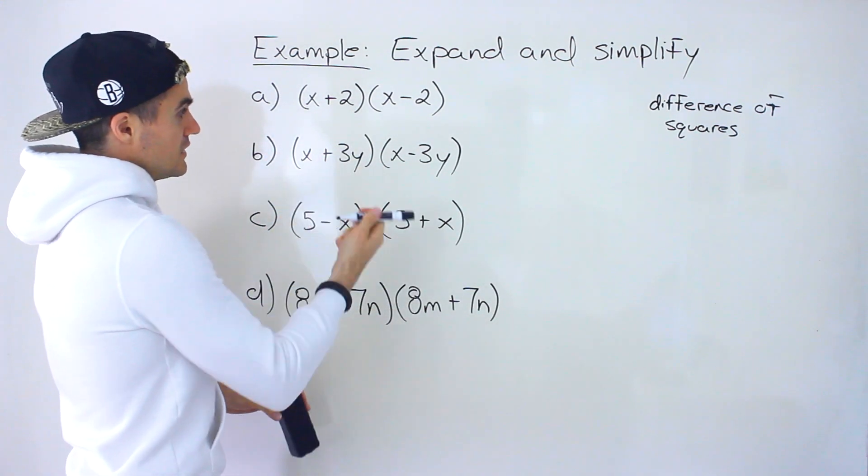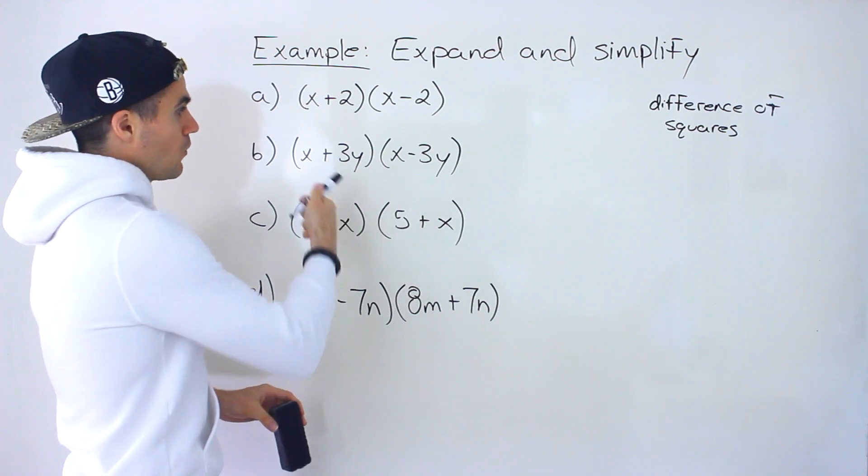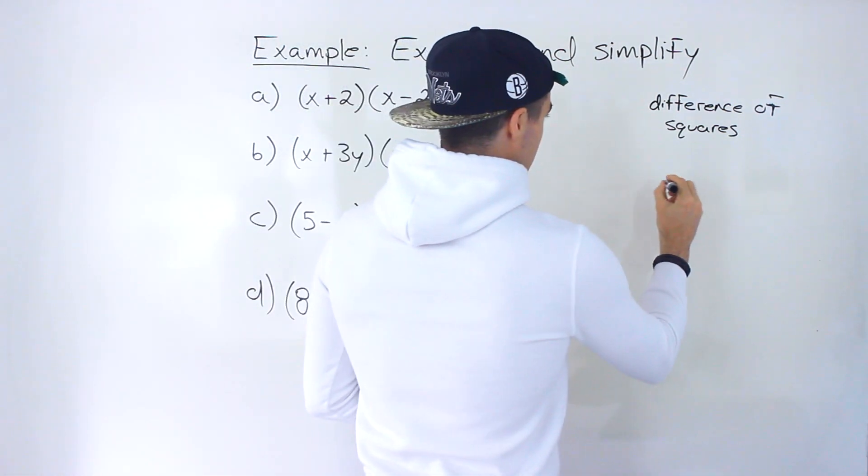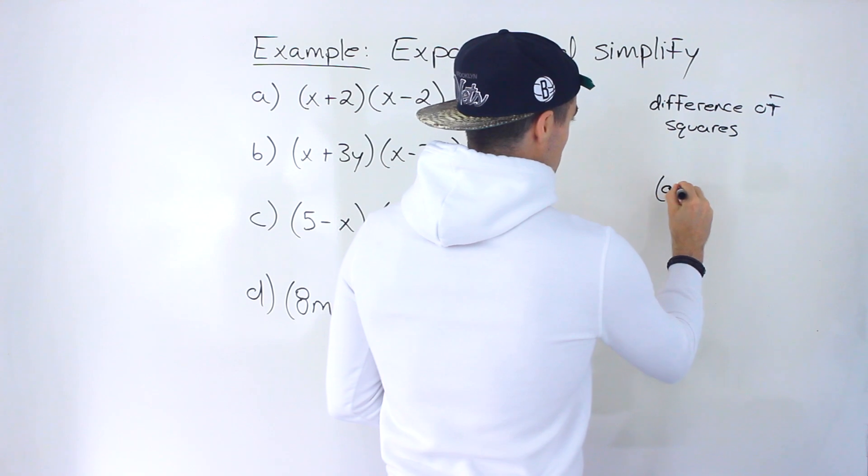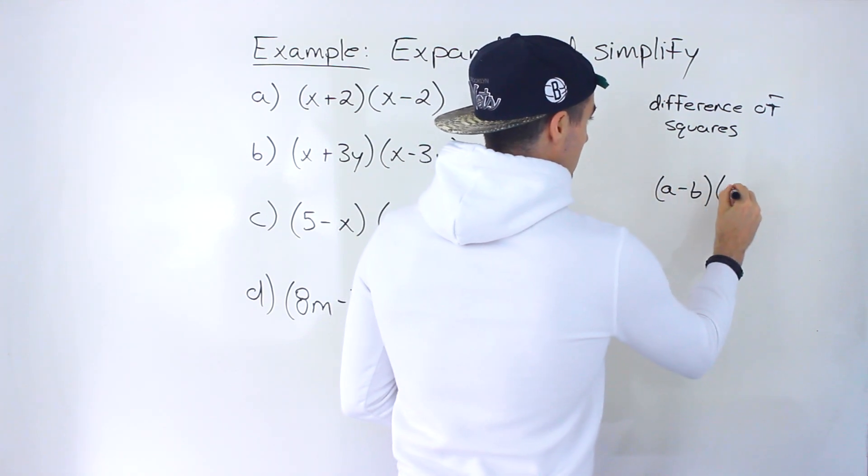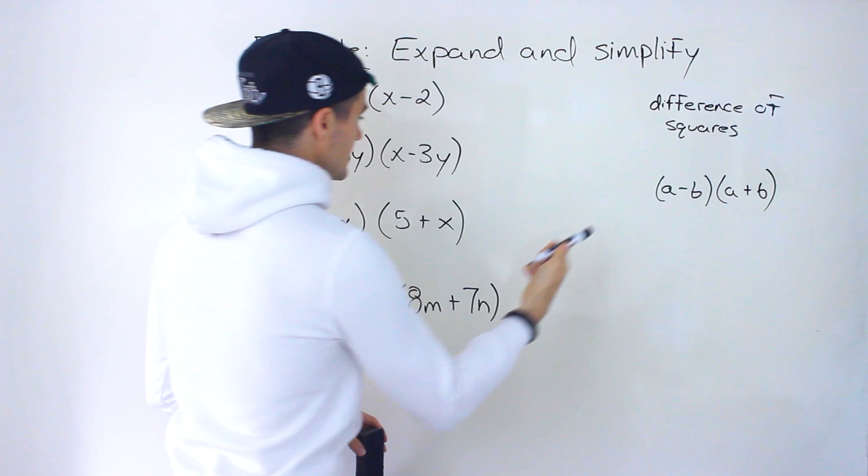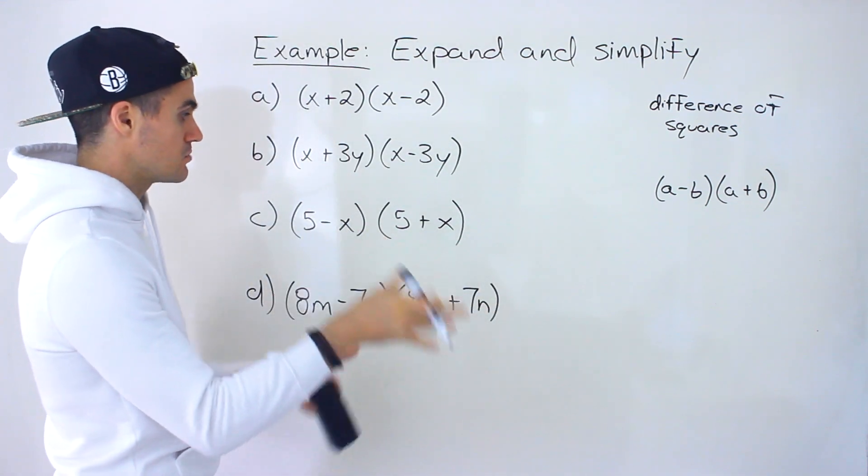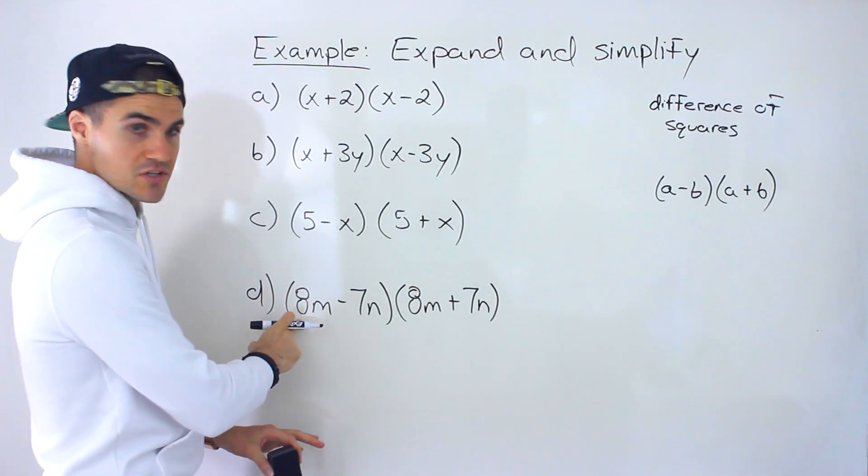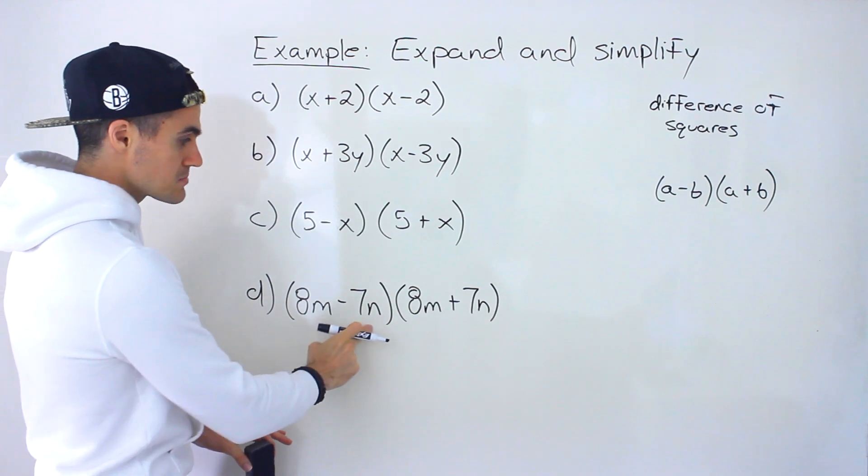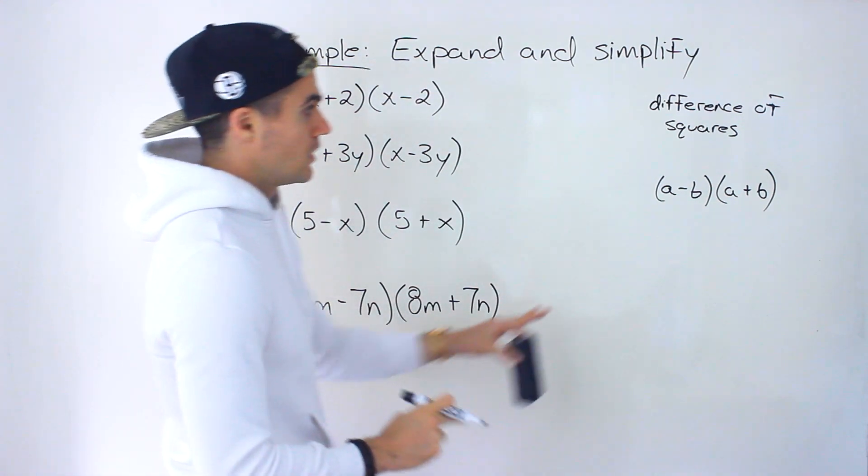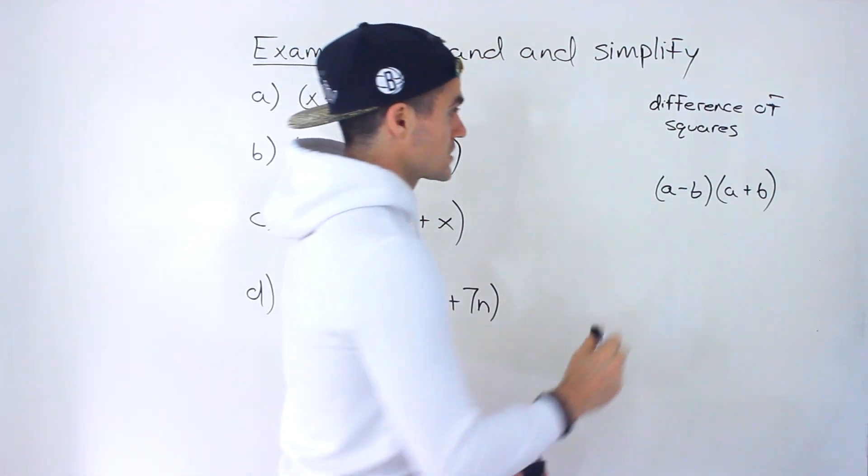Here this is called a difference of squares. And the reason why is because, let's say just in general, you got a minus b, a plus b, right? Where this a and this b, it could be anything, could be numbers, could be variables, could be a mix of numbers and variables. So this is like a minus b, a plus b. What would happen in general if you expand this?